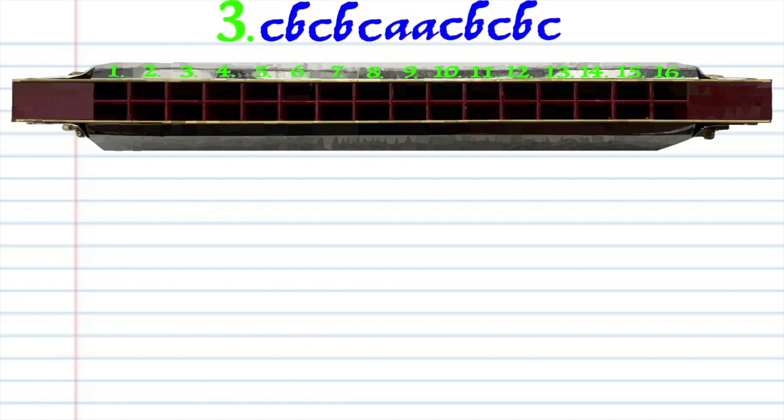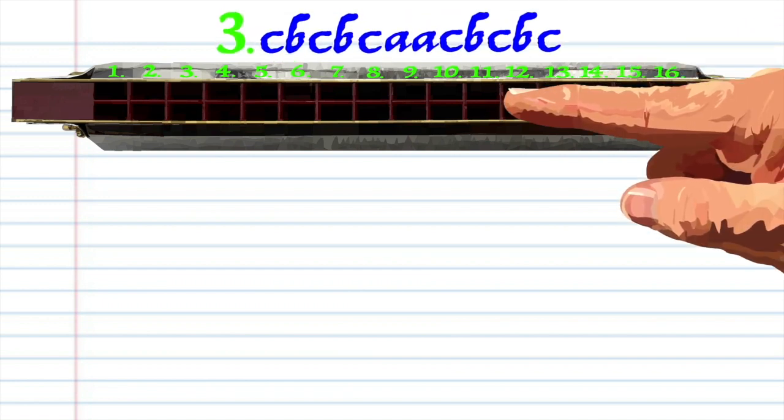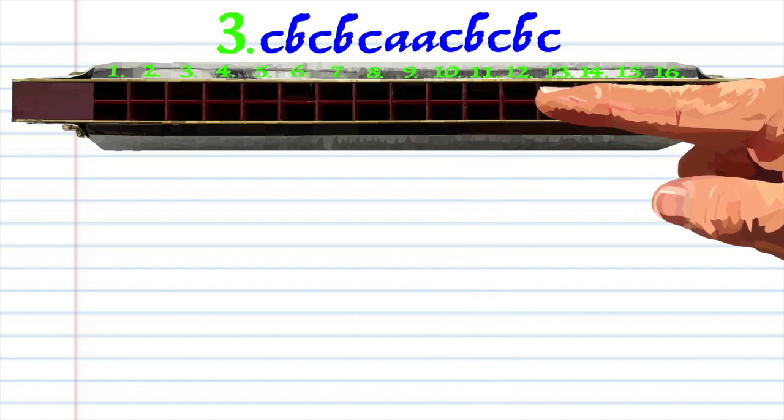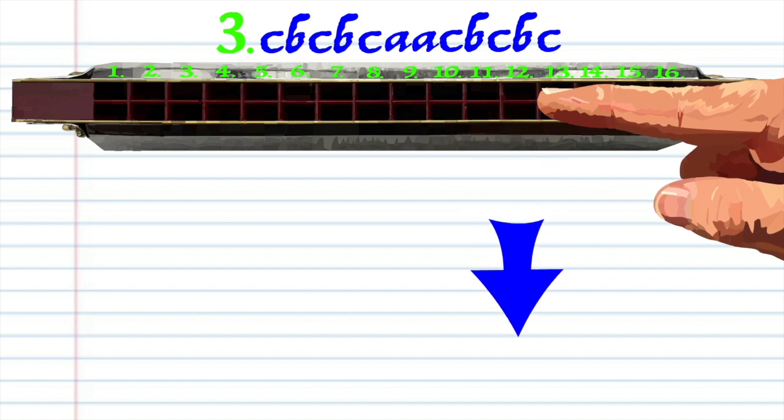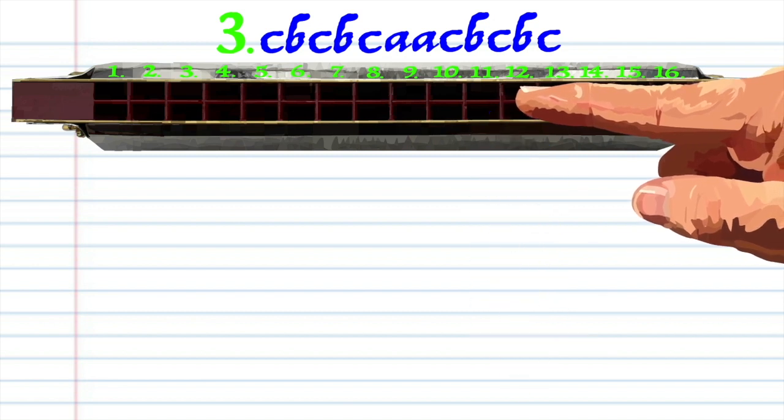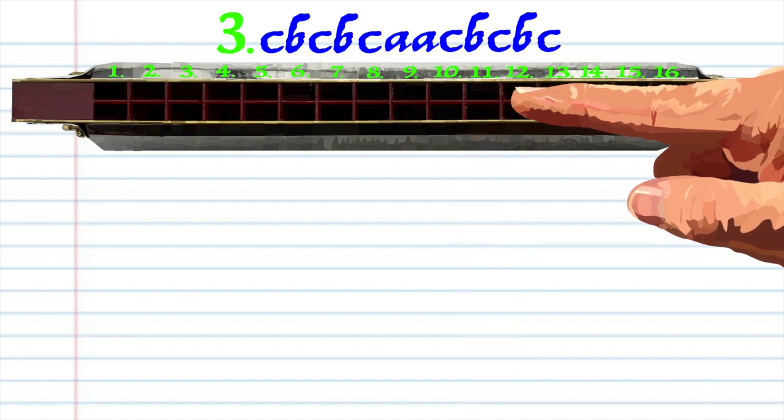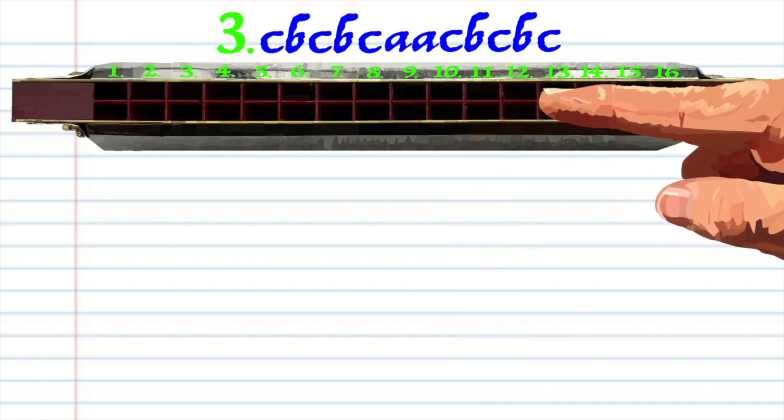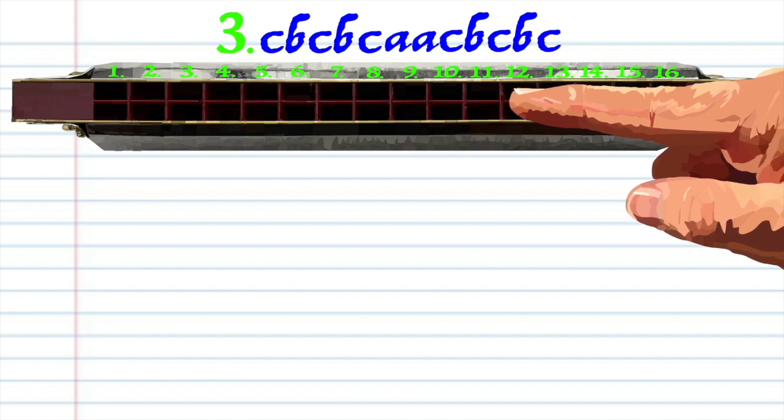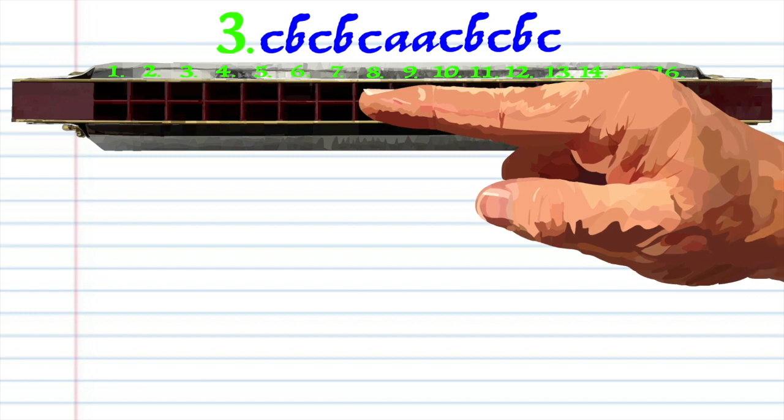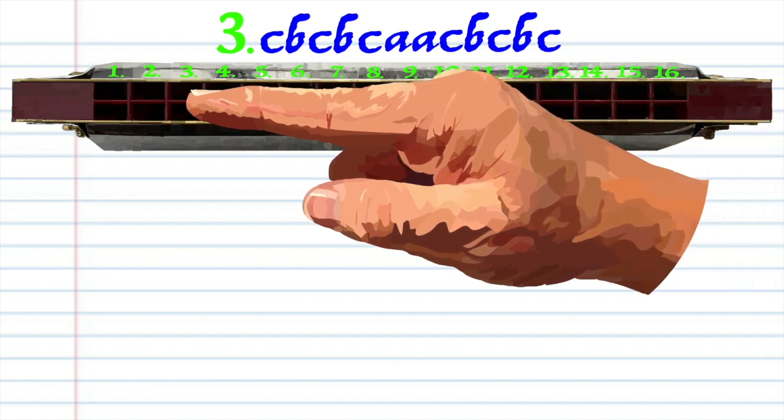For phrase 3, blow into 11, breathe in through 12, blow into 11, breathe in through 12. Breathe in through 12, blow into 11, and breathe in through 2 twice.